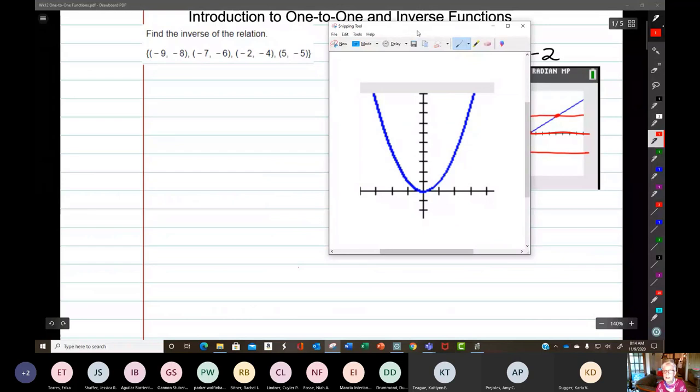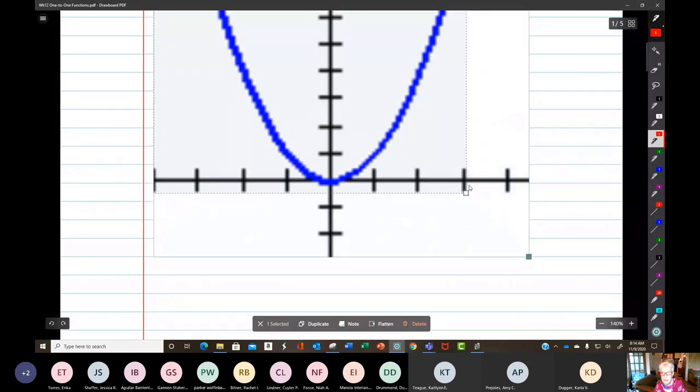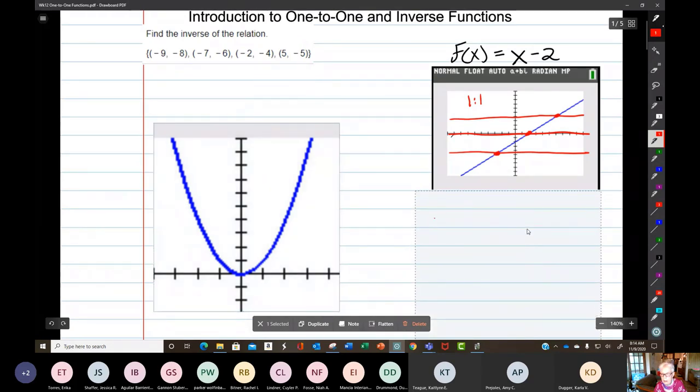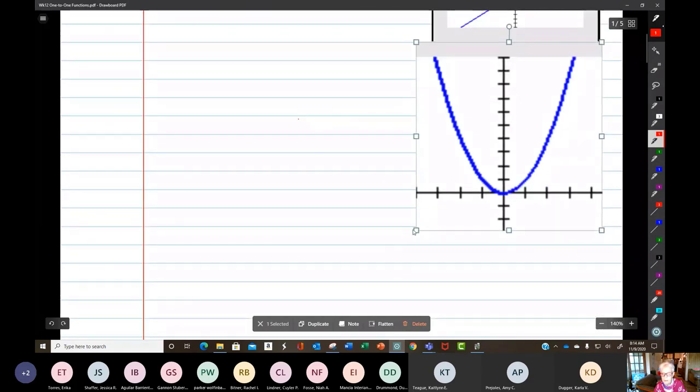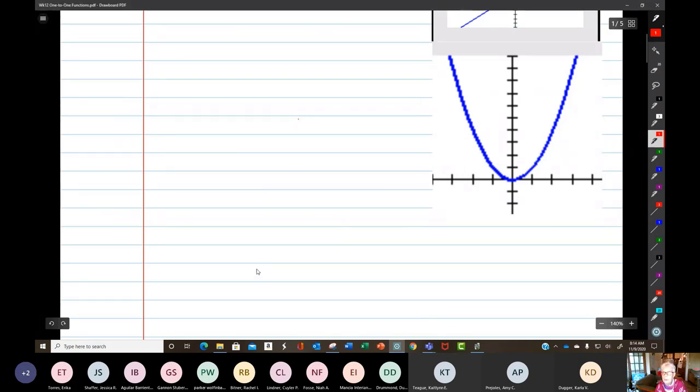Let's just come over here. The parabola that ate northwest Arkansas. I'm going to draw a horizontal line through the graph. Notice that the horizontal line touches the graph at two points.